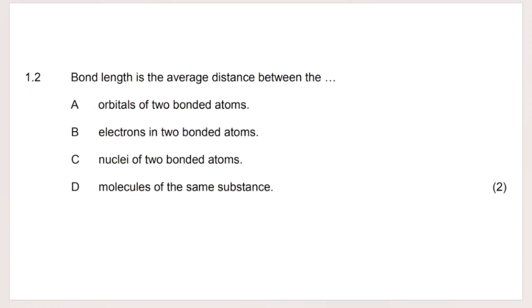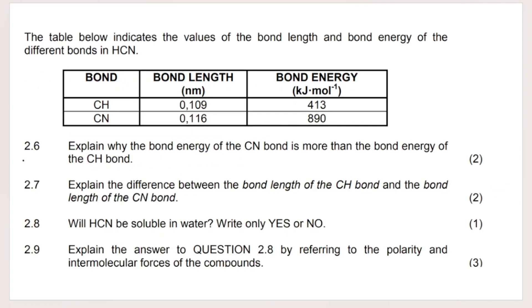Here's a multiple choice version — bond length is the average distance between the nuclei of two bonded atoms, so definitions can appear in multiple choice too. The next question gives two bonds: a C–H bond and a C≡N bond. Explain why the bond energy of the C–N bond (890 kJ/mol) is more than the C–H bond (413 kJ/mol), given that their bond lengths aren't very different.